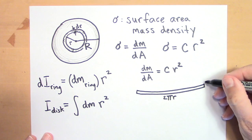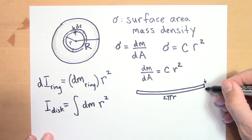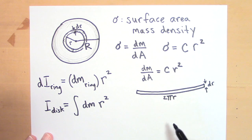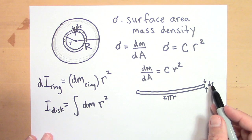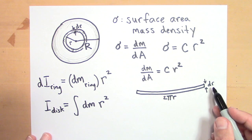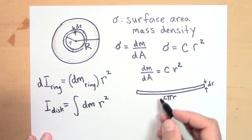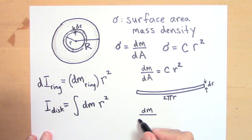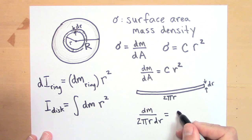And it's going to have a height, a thickness of dr. So that little area, dA, that little area is just two pi r times dr. That's what that little area is. It's just the height times the width. So I'm going to say that dM over dA, but dA is two pi r dr.